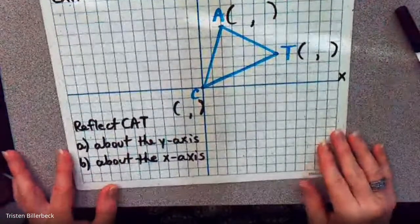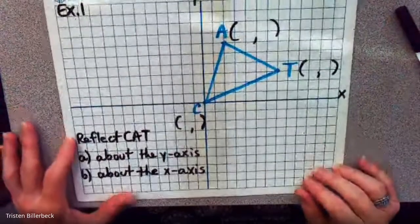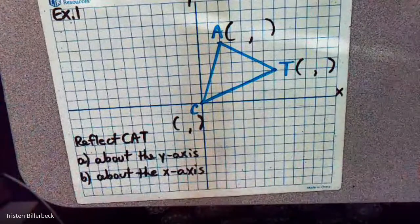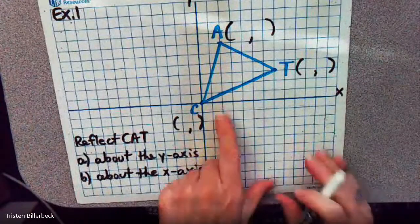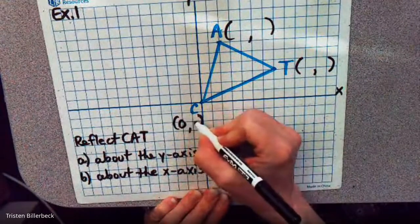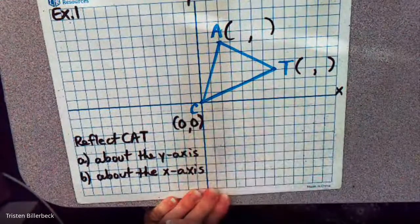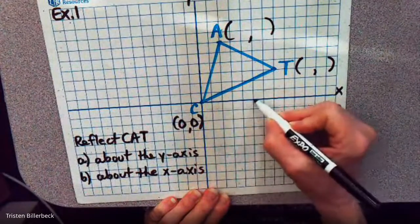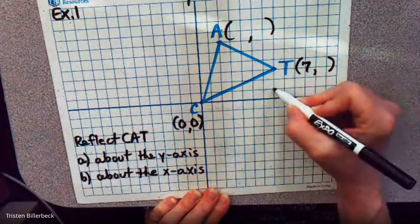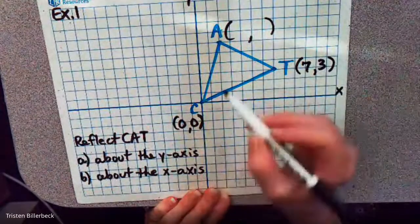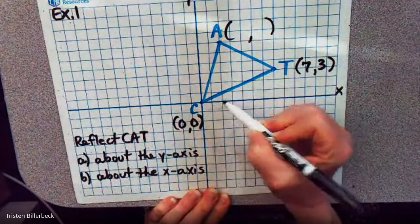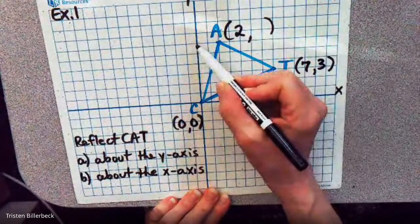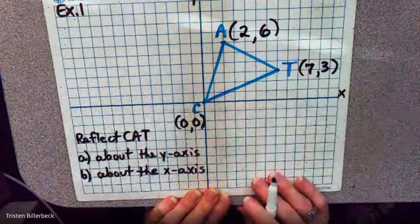Let's reflect triangle CAT about the y-axis. C is at the origin (0, 0), T is at (7, 3), and A is at (2, 6). We always have x first and then y.